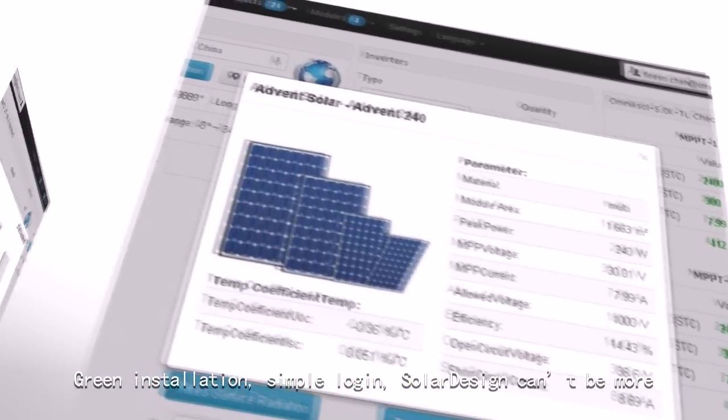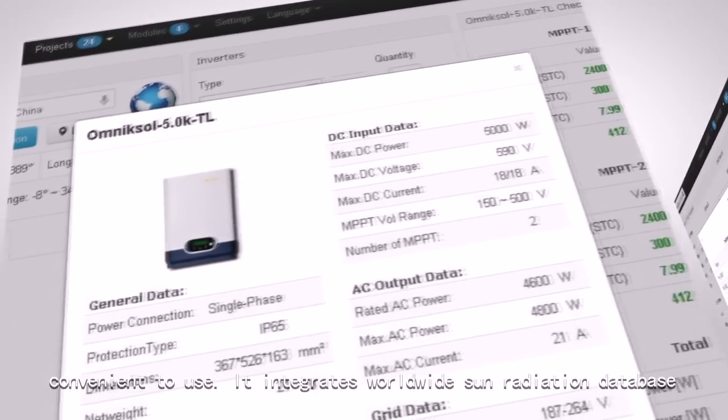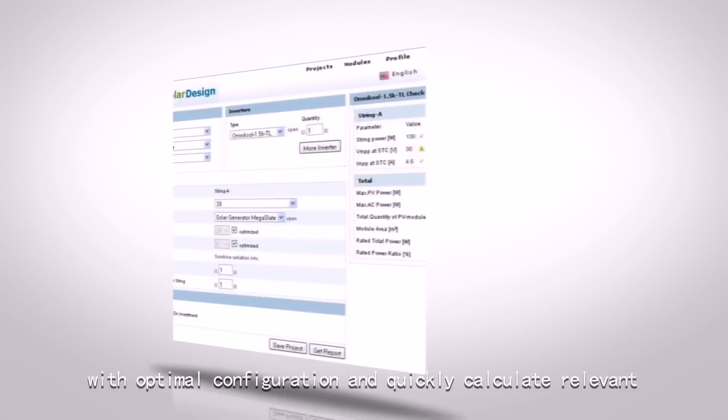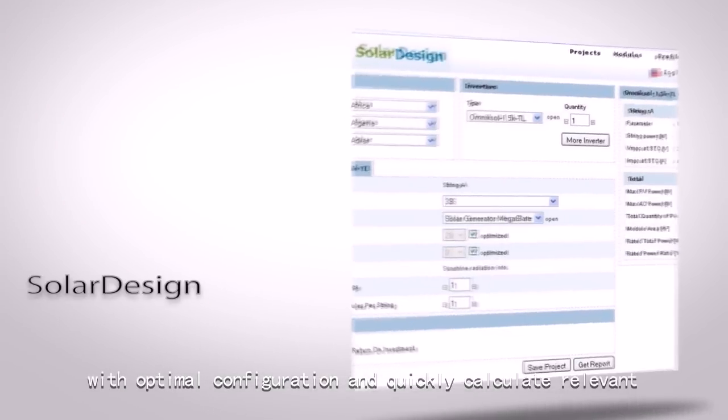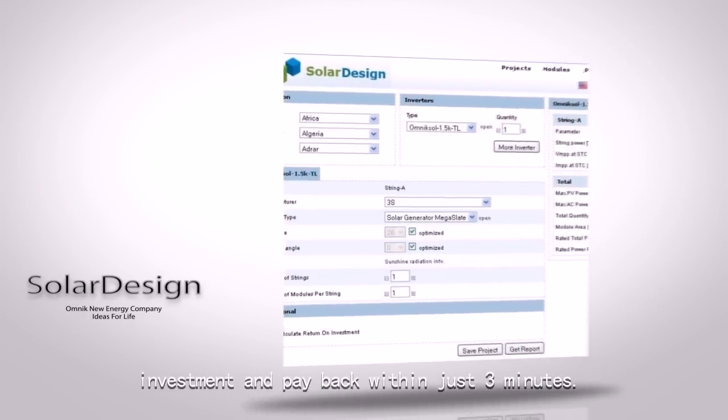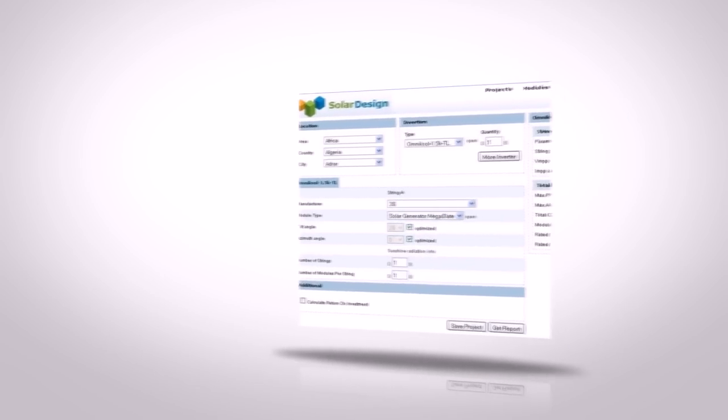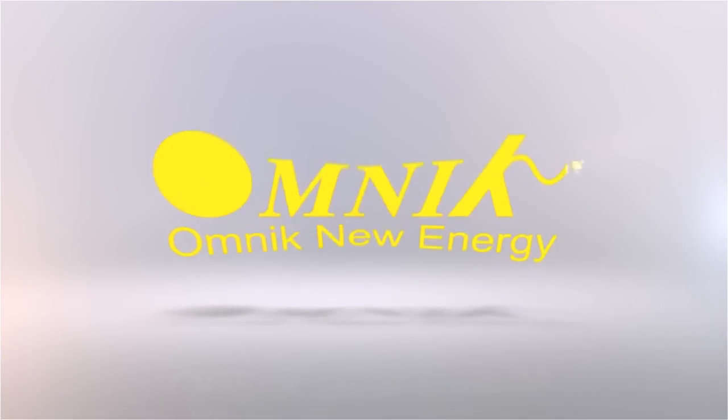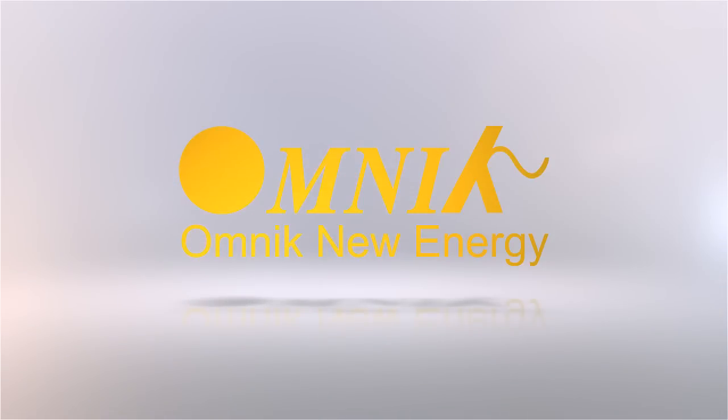Green installation, simple login - Solar Design is convenient to use. It integrates worldwide sun radiation database with Google Map positioning function. It can design a system with optimal configuration and quickly calculate relevant investment and payback within just three minutes. Omnic: professional inverter manufacturer.